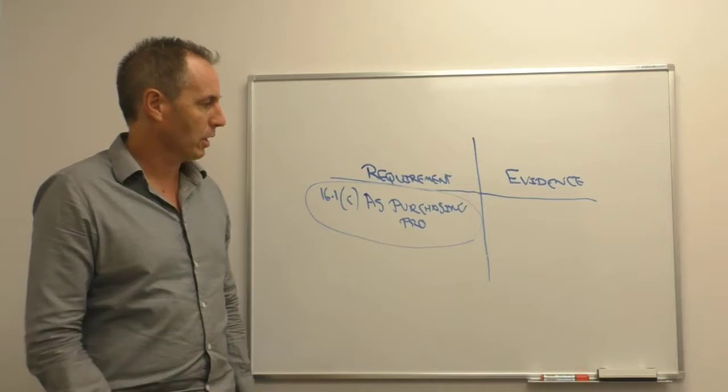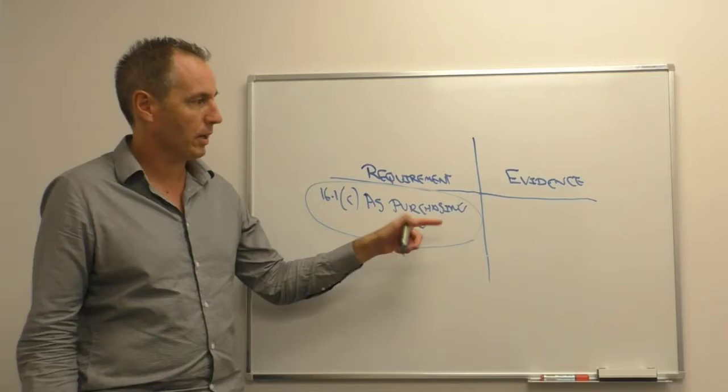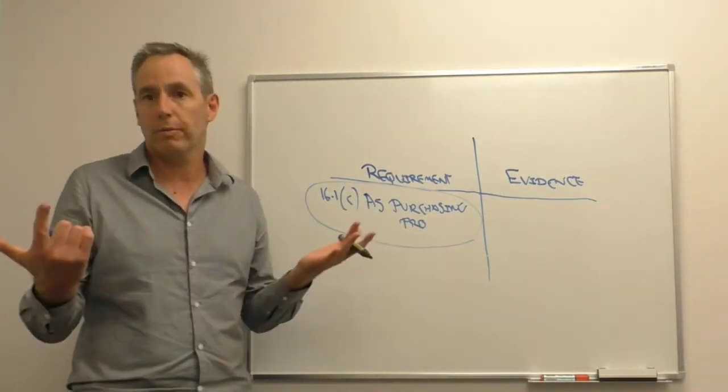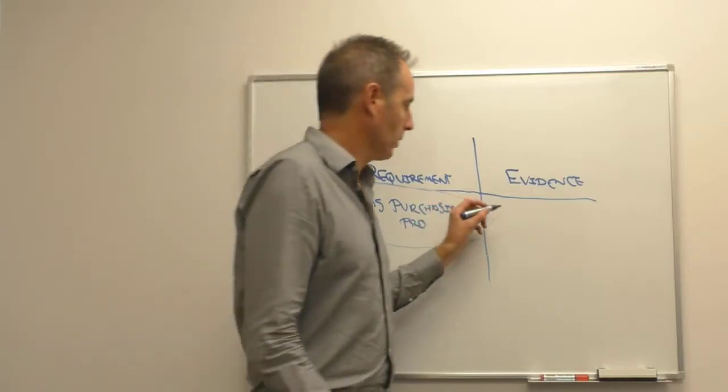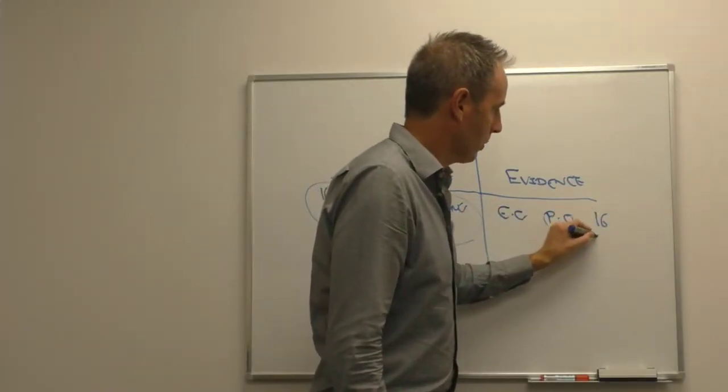With our evidence though, again, we'd be very specific. What exact purchase orders demonstrate that some of them over the required amount, $10,000, are not signed off by the authorized person? So we'd be specifically say, for example, purchase order 16 and purchase order 25.